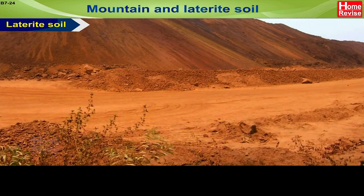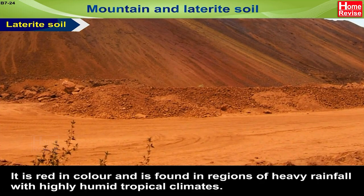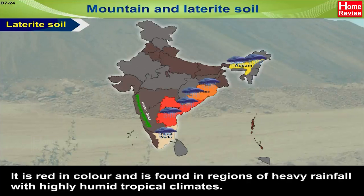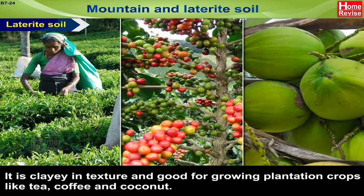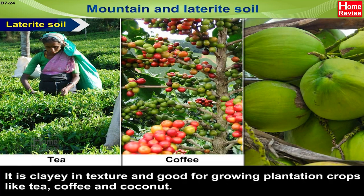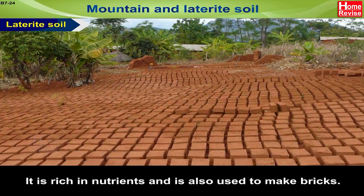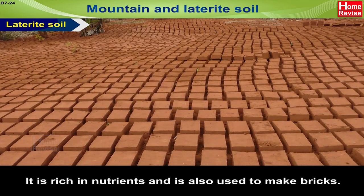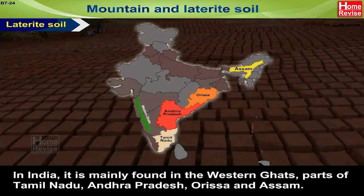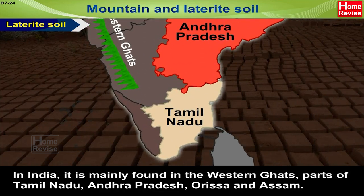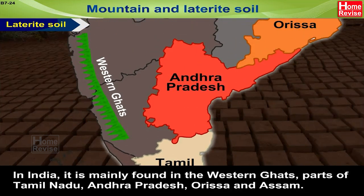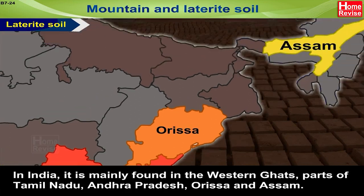Laterite Soil: It is red in colour and is found in regions of heavy rainfall with highly humid tropical climates. It is clayey in texture and good for growing plantation crops like tea, coffee, and coconut. It is rich in nutrients and is also used to make bricks. In India, it is mainly found in the Western Ghats, parts of Tamil Nadu, Andhra Pradesh, Orissa, and Assam.